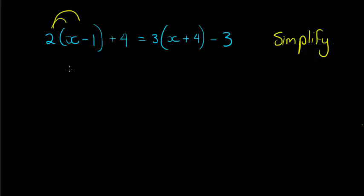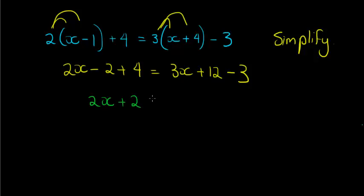2x minus 2 plus 4 is equal to 3x plus 12 minus 3. All I did was distribute this, which we've done more than enough of at this point. And now I simplify. Negative 2 plus 4 gives me 2x plus 2 is equal to 3x plus 12 minus 3 is 9. And here you see we've got the same idea again.